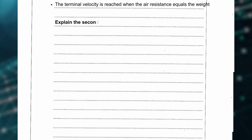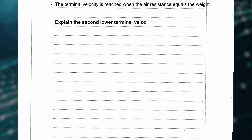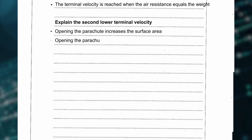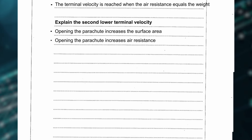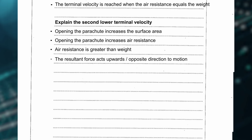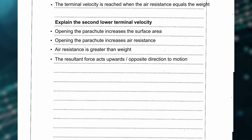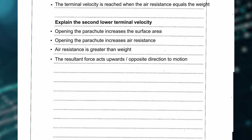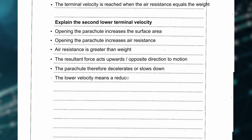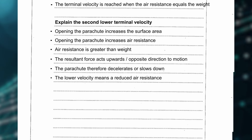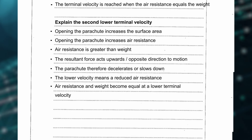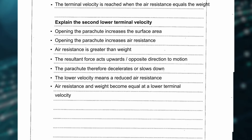To explain the second lower terminal velocity: opening the parachute increases the surface area and increases air resistance. Air resistance is now greater than weight, so the resultant force acts upwards, or in the opposite direction to motion. The parachutist therefore decelerates or slows down. The lower velocity means reduced air resistance, and air resistance and weight become equal again but at a lower terminal velocity.